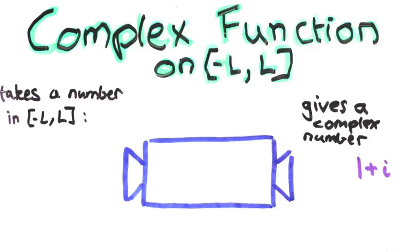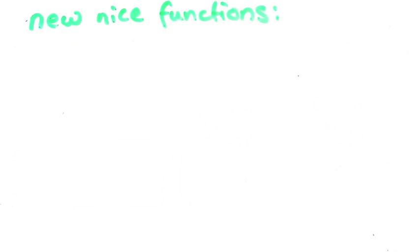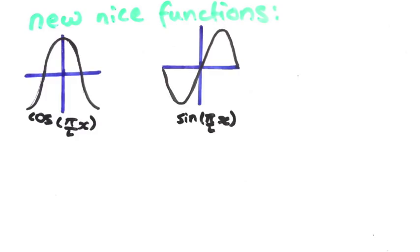The general version of the Fourier series can even approximate those kind of functions. Here's how. First, we need a new set of nice functions, because our old ones are all real valued, and that won't do for this. This is how we create our new ones. To make the first one, take the two biggest squiggling functions and multiply one of them by the imaginary number i, and then add them together.